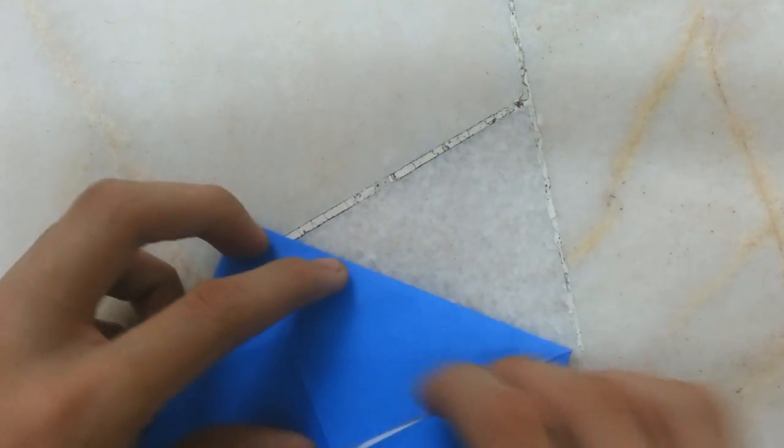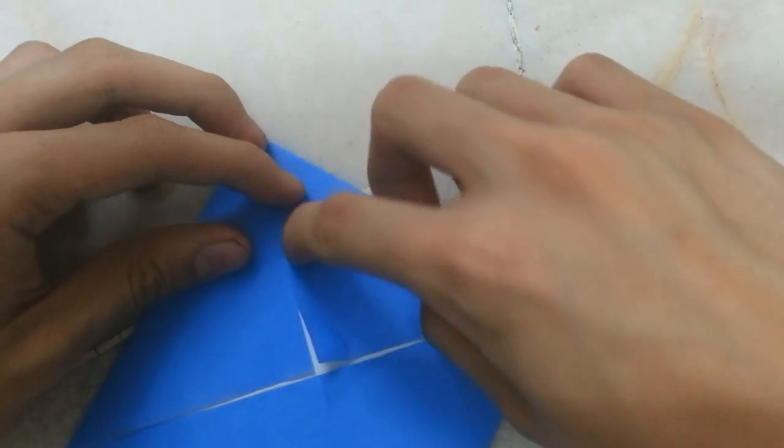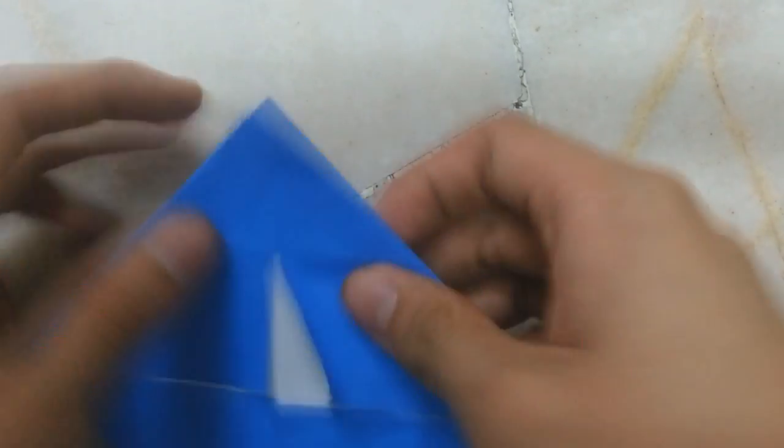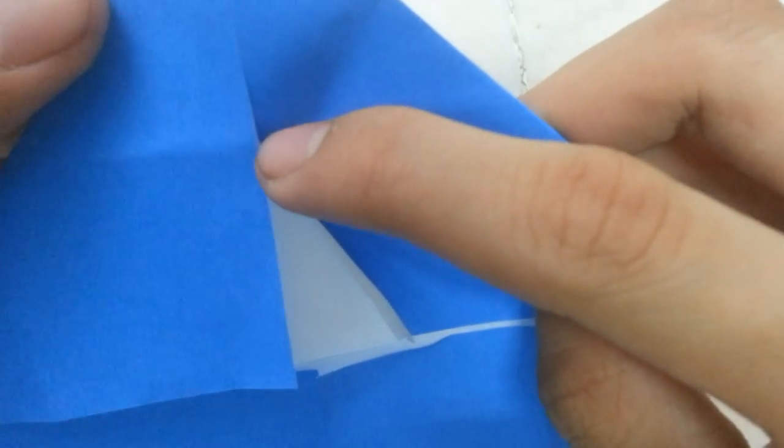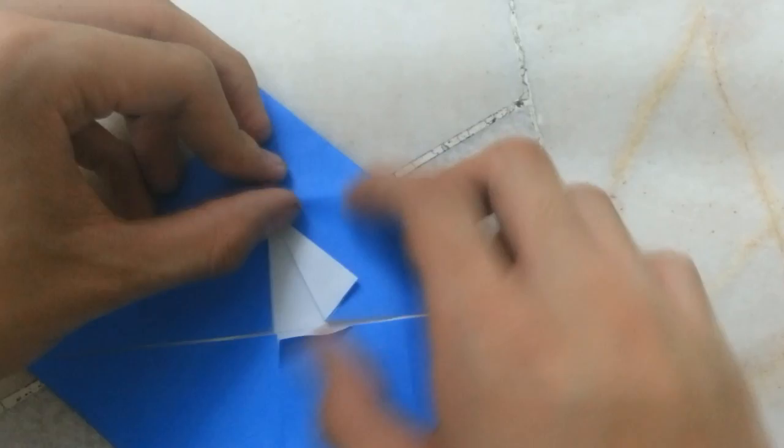You first make crease like that. Then the point should, from this crease you just made just now, like that.